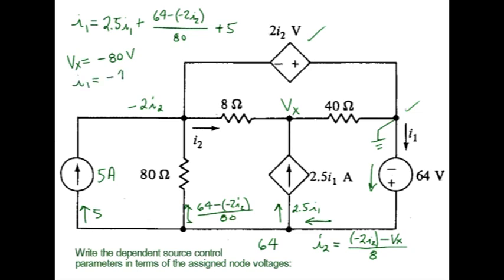I1 is minus 4 amps, and I2 works out to be 8 amps. So that is the final solution for this.